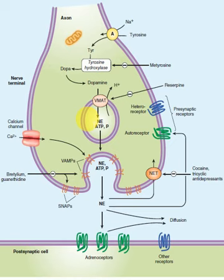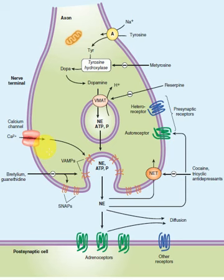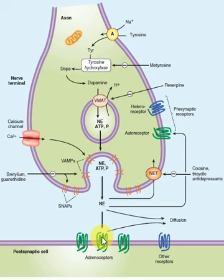Once dopamine reaches the vesicles, it is transformed into norepinephrine by an enzyme called dopamine beta-hydroxylase. When the pre-synaptic terminal is activated by the entry of calcium through the calcium channel, the vesicles fuse with the pre-synaptic membrane and norepinephrine is released. The released norepinephrine then goes to the adrenergic receptors and exerts its agonist actions.